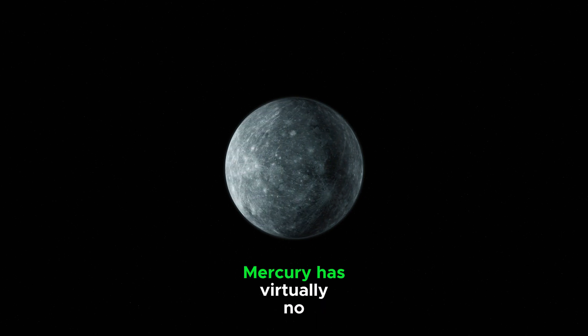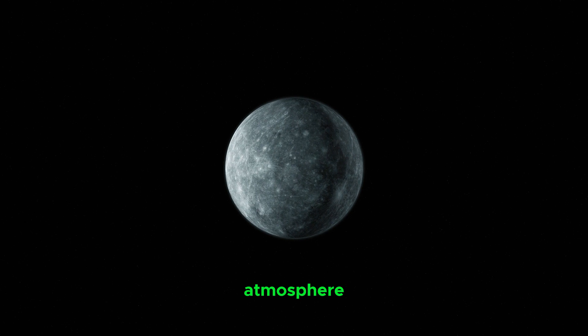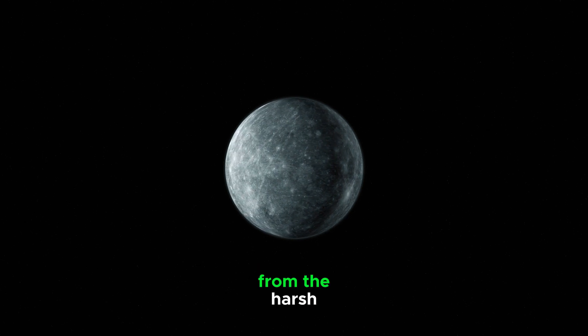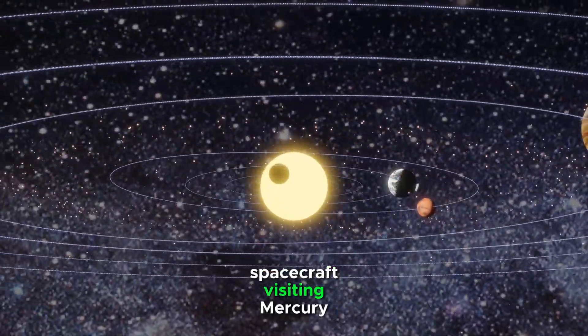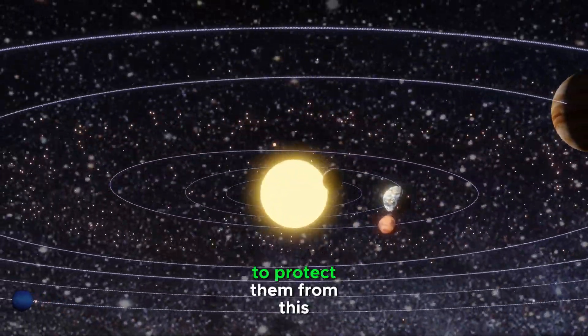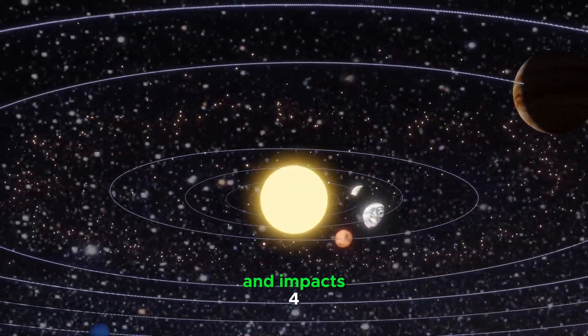No Atmosphere. Unlike Earth, Mercury has virtually no atmosphere. This means it has no protection from the harsh solar radiation and micrometeoroids bombarding its surface. Spacecraft visiting Mercury would need special shielding to protect them from this radiation and impacts.